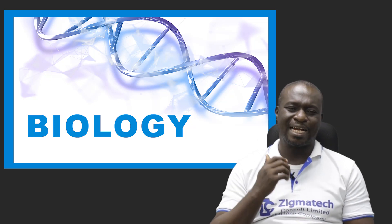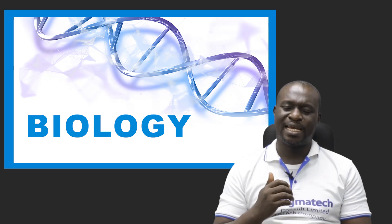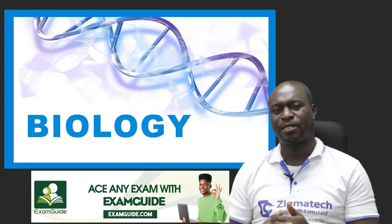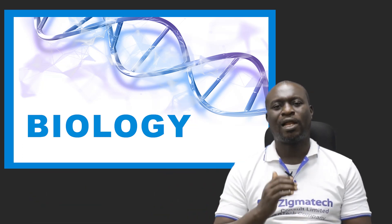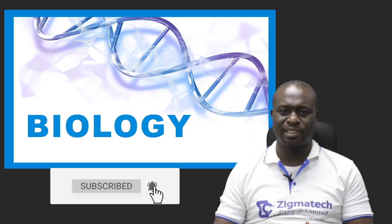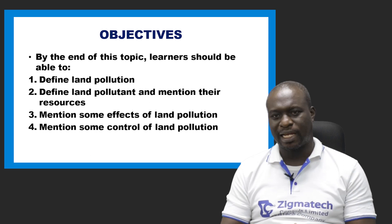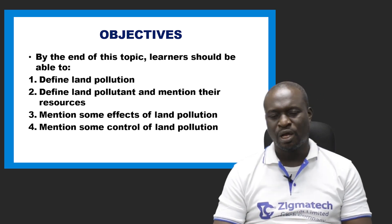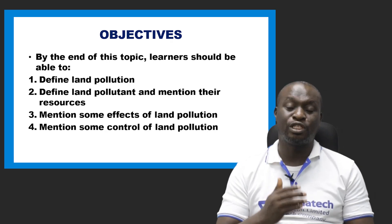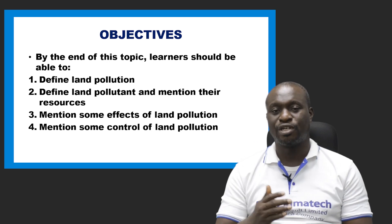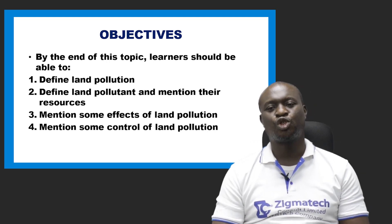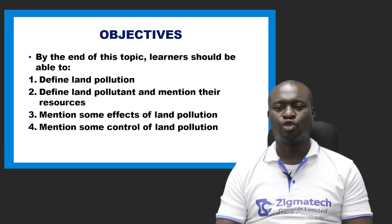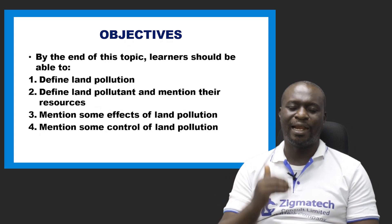Today we are going to be looking at another type of pollutant, and that is land pollution. Now, the specific objectives for this class are: number one, you should be able to define land pollution; number two, define land pollutants and mention their sources; number three, mention some of the effects of land pollution; and number four, mention some of the ways we can control land pollution.